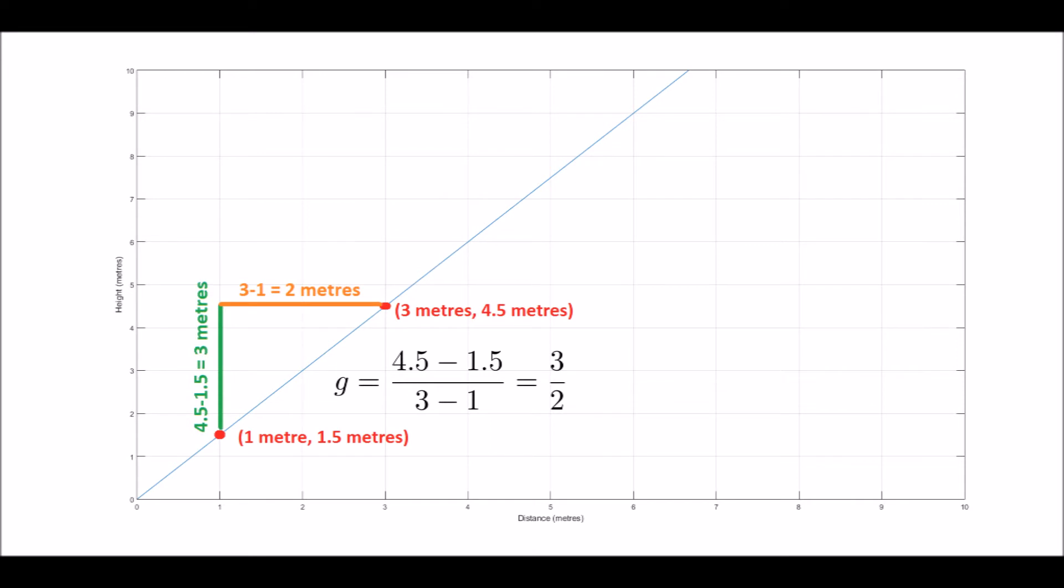Then at these same points, we get the height. So at this point at 1m distance, its height is 1.5m. Then at the point at 3m distance, it's 4.5m. So the change in height between the points is simply 4.5 minus 1.5m, or 3m, shown by the green line here. Then we can just divide the change in height over the change in distance, and we get the gradient of 3 over 2.